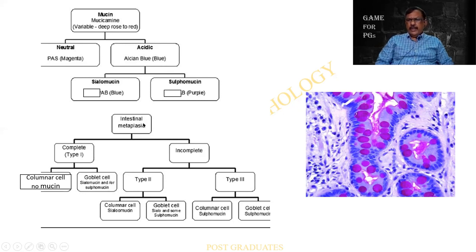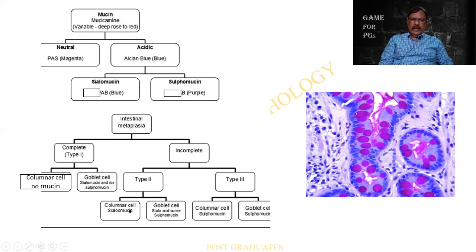There is a second group called intestinal metaplasia. Whenever there is gastritis, the gastric epithelium is replaced by an intestinal type of epithelium — either small or large intestine. There can be complete metaplasia or incomplete metaplasia. In complete metaplasia, there is columnar cell but no mucin, and goblet cells will have sialomucin or sulfomucin. In incomplete metaplasia, there are two types — type 2 and type 3 — each having columnar and goblet cells with sialomucin and sulfomucin respectively.